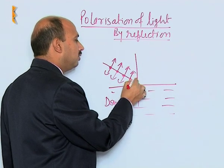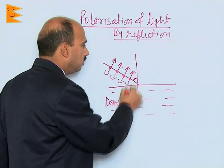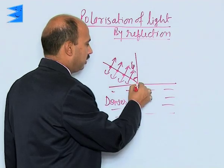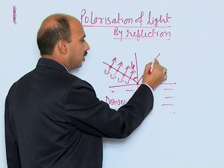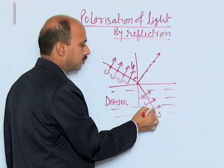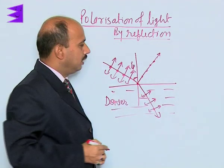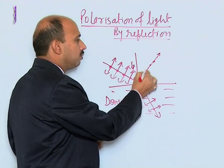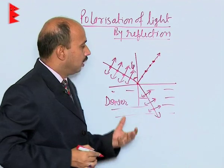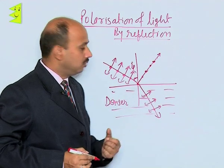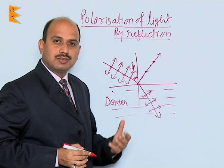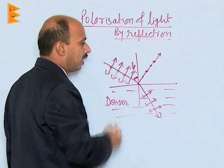If you keep on changing the angle of incidence, at a certain angle — called Ip — the component which is perpendicular to the plane of incidence gets reflected to this side, and the other component comes through to this side. This light is polarized because only one component is obtained. This certain angle is called Brewster's angle, or the angle of polarization.